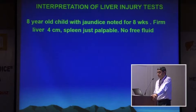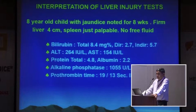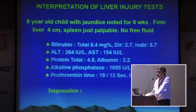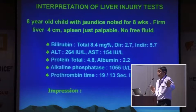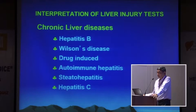Here's another child: eight years old with jaundice noted for eight weeks, firm liver four centimeters, spleen just palpable, no free fluid. Bilirubin 8.4, direct 2.7; ALT in the 200s; albumin 2.2; ALP 1055; INR 1.4. The albumin is 2.2 and the liver is firm — this is a chronic liver disease. Everything is altered but nothing dramatically elevated like the previous patterns. Causes to consider: hepatitis B, Wilson's disease, drug-induced, autoimmune, steatohepatitis, and in older children around 15–16 years, hepatitis C.